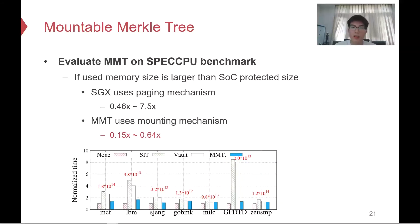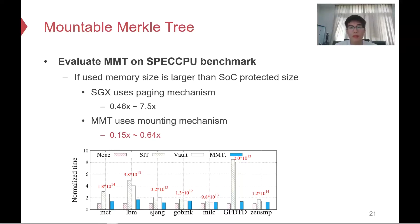Second, we evaluate the Multiple Merkle Chain with the SPEC CPU benchmark. When the enclave memory size is larger than the SoC-protected size, SGX uses a pager mechanism to swap secure data into normal memory, which increases overhead up to 7.5 times. However, with the Mountable Merkle Tree, it uses a mounting mechanism to mount the subchain root into SoC, introducing at most 0.64 times overhead — much less than SGX.